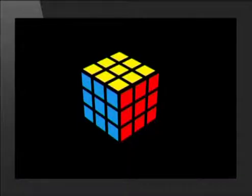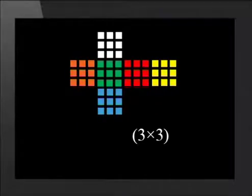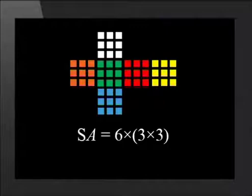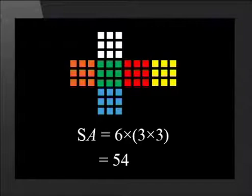For example, a cube has 6 faces. In the case of a square, the area of each face is equal. So, if one side of a cube is equal to 3 units, the area of each face will be 3 times 3, and the surface area of the cube will be 6 times 3 times 3. This is 54.